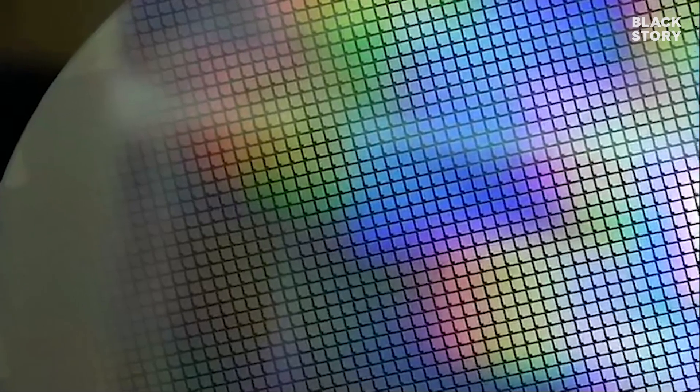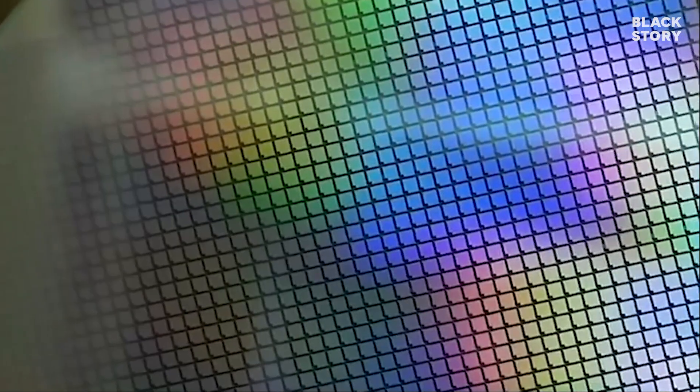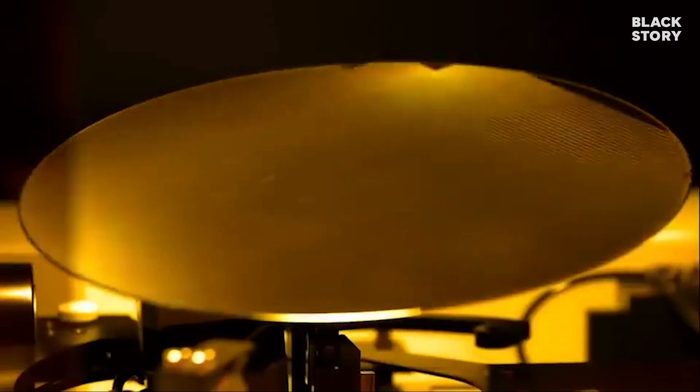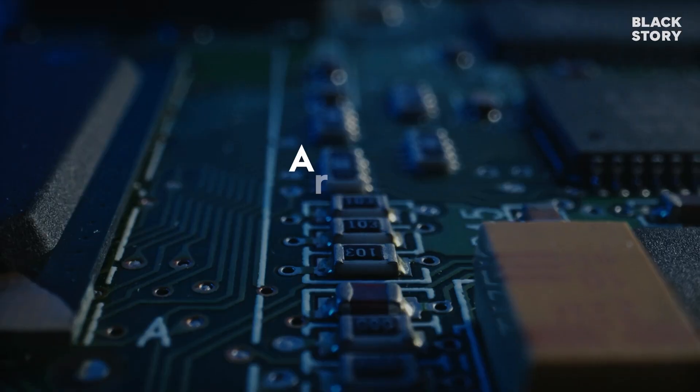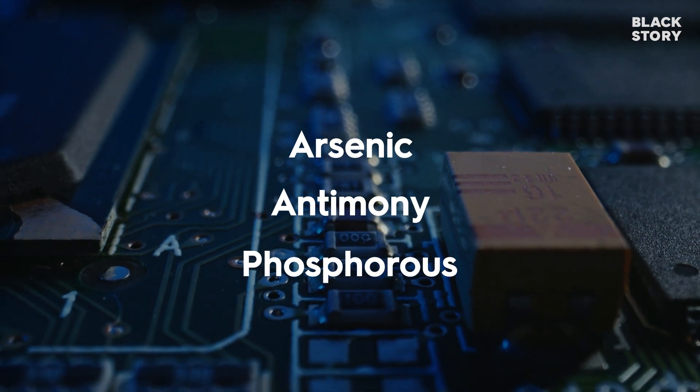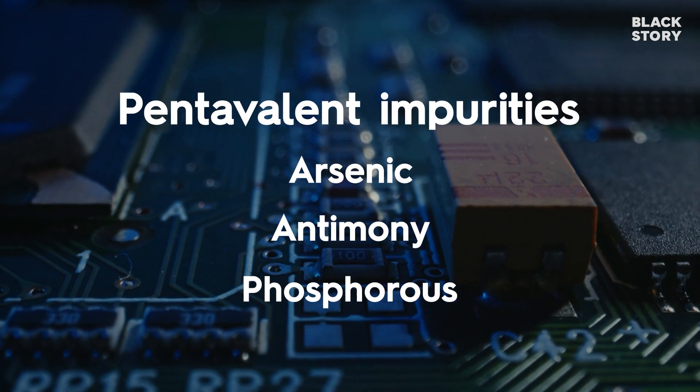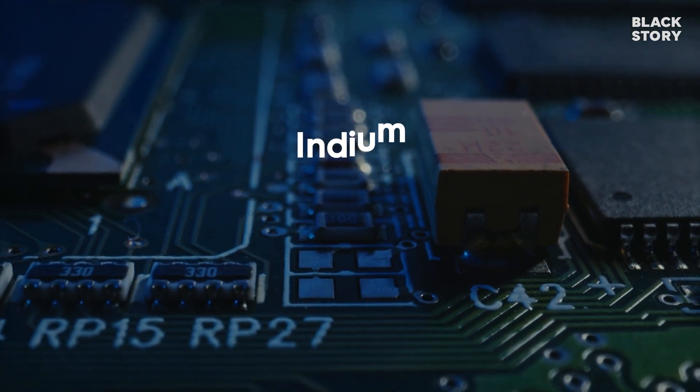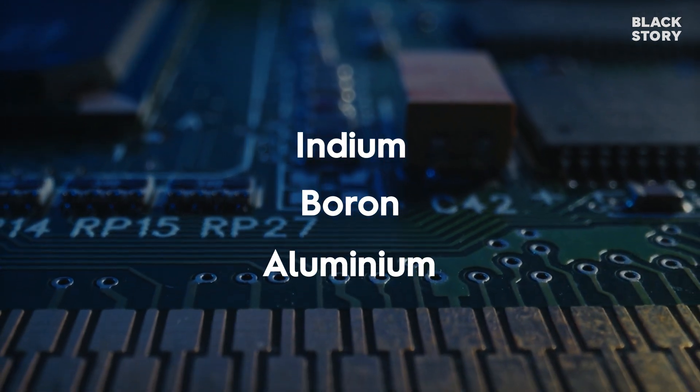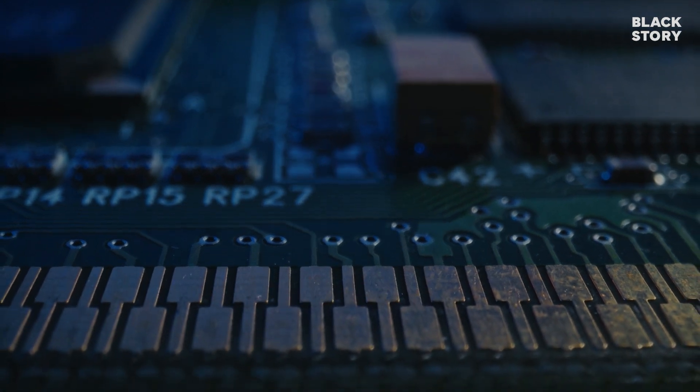Number of charge carriers can be increased by adding impurities to the semiconductor elements. Semiconductors made through the doping process are called extrinsic semiconductors. Arsenic, antimony, and phosphorus are commonly used impurities having valency of 5 and called pentavalent impurities. Indium, boron, and aluminum are commonly used impurities having valency of 3 and are called trivalent impurities.